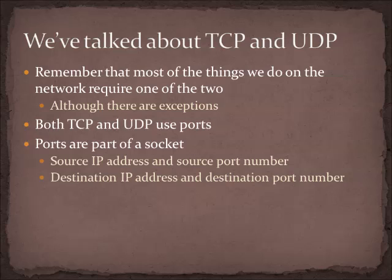Remember that most of the stuff that we do on a network has to use either TCP or UDP at layer 4. These are what we call our transport layer protocols. There are some exceptions — some things that occur on a network don't actually have encapsulation at layer 4 — but most of what we do as users requires TCP or UDP. When you're using TCP or UDP, you're using one of those flavors of addressing that we call a port. We have MAC addresses at layer 2, IP addresses at layer 3, and ports at layer 4.